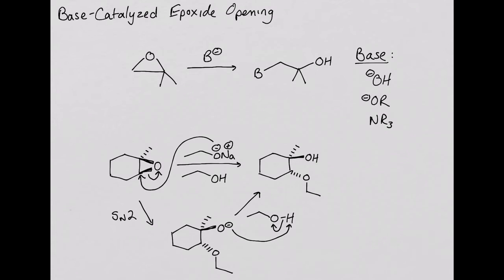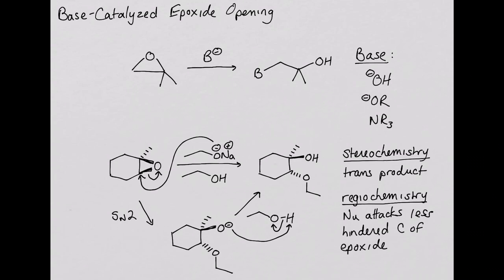Notice that the observed stereochemistry is a trans addition of the ether to the alcohol. The regiochemistry is that the nucleophile attacks the less-substituted carbon of the epoxide. Note that this is the opposite that we saw with the acid catalyzed opening of epoxides. Be sure to review the mechanism for the acid catalyzed opening of epoxides.